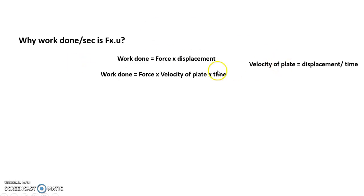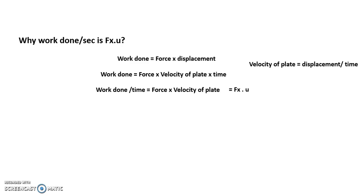Taking time to the denominator on the left-hand side, work done per time is force into velocity of the plate. So work done per second equals force into velocity of the plate, which can be written as Fx into u, where u is the velocity of the plate. That addresses the first question.